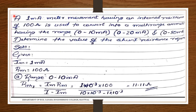Next problem: a 1 mA ammeter movement with internal resistance of 100 Ω is to be converted into a multi-range ammeter with ranges 0–10 mA, 0–20 mA, and 0–50 mA. Determine the shunt resistance required for each range. Given: I_m = 1 mA, R_m = 100 Ω. The shunt formula is: R_sh = (I_m × R_m) / (I minus I_m).